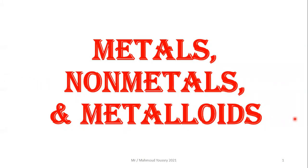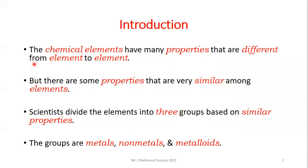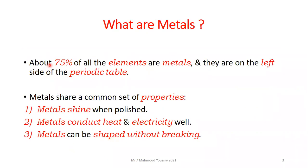Hello, dear students, welcome to a new episode of science. This is Mr. Mahmoud Yusri. Today we will be talking about metals, non-metals, and metalloids. The chemical elements have many properties that are different from element to element, but there are some properties that are very similar among elements. Scientists divided the elements into three groups based on similar properties: metals, non-metals, and metalloids.